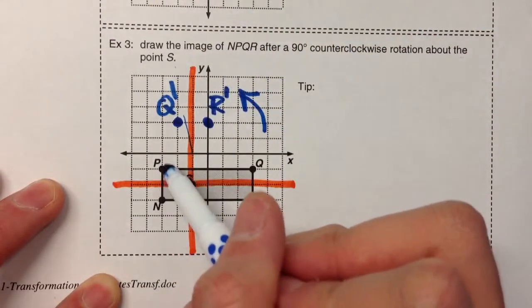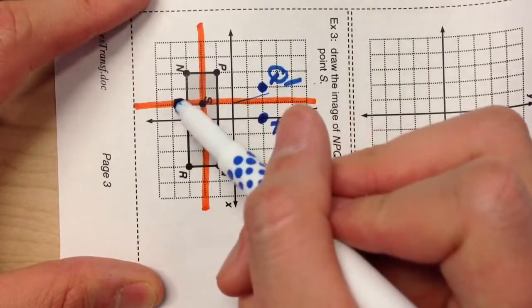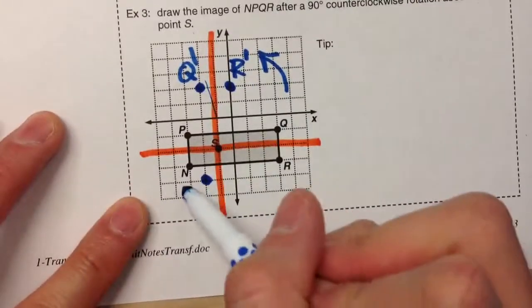P is two left, one up. Two left, one up. That's my P'.